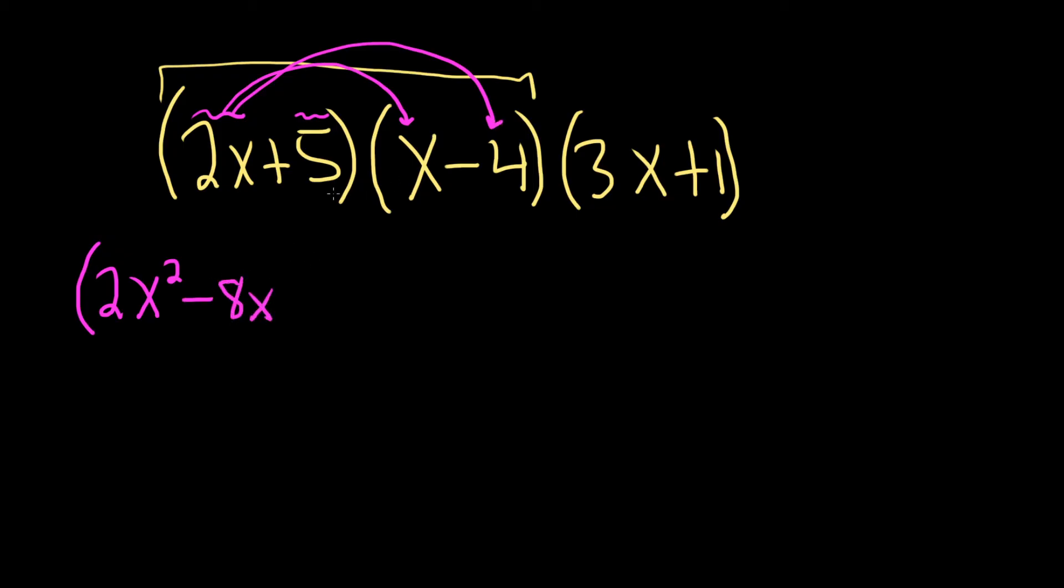Now we go to the 5. 5 times x will give us a positive 5x. And then 5 times negative 4 is going to give us a negative 20. And then we still have this other piece hanging out. Parentheses, 3x plus 1.